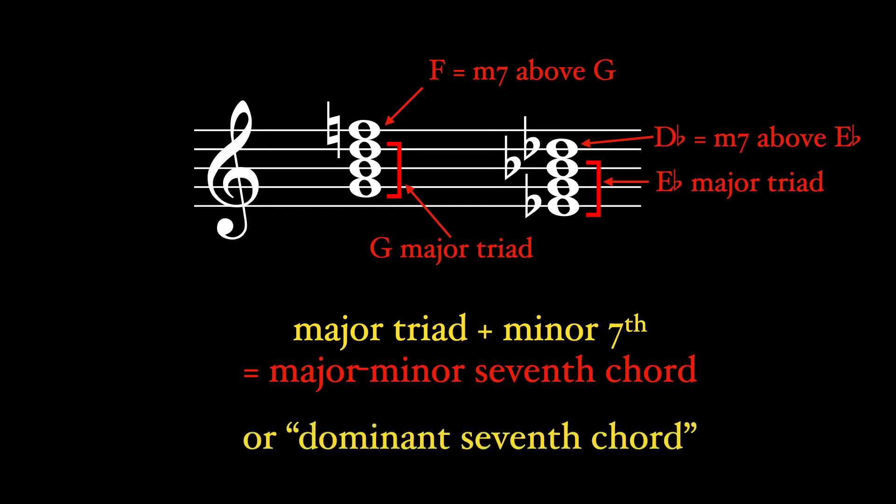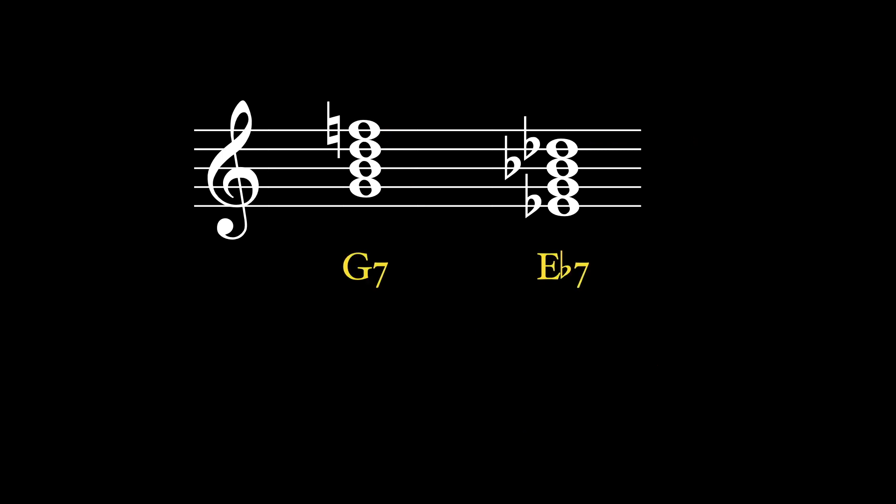Most people just call this a dominant seventh chord, since it is the seventh chord that you get when you stack thirds above the dominant scale degree in either major or minor. The dominant seventh chord is the most common seventh chord in most western tonal styles. This is probably why the lead sheet notation is just the root and the number seven.